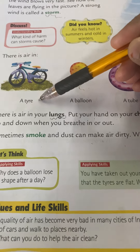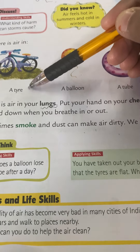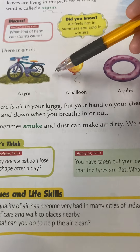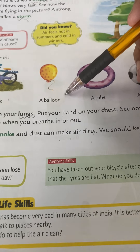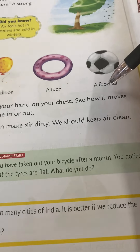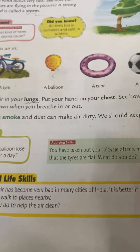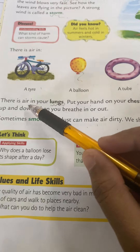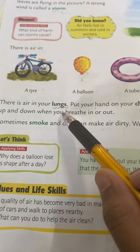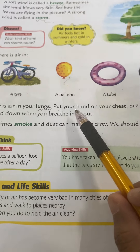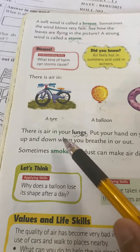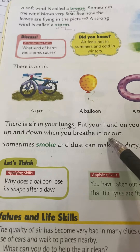There is air in a tyre. A bicycle tyre has air in it. Even the moped, scooter, or bike that mummy and daddy ride has air in it. A balloon, a tube, and car tubes have air. A football also has air, so air can be collected and filled into an object. There is air in your lungs — we did the activity of breathing in and breathing out. Put your hand on your chest and see how it moves up and down when you breathe in or out.